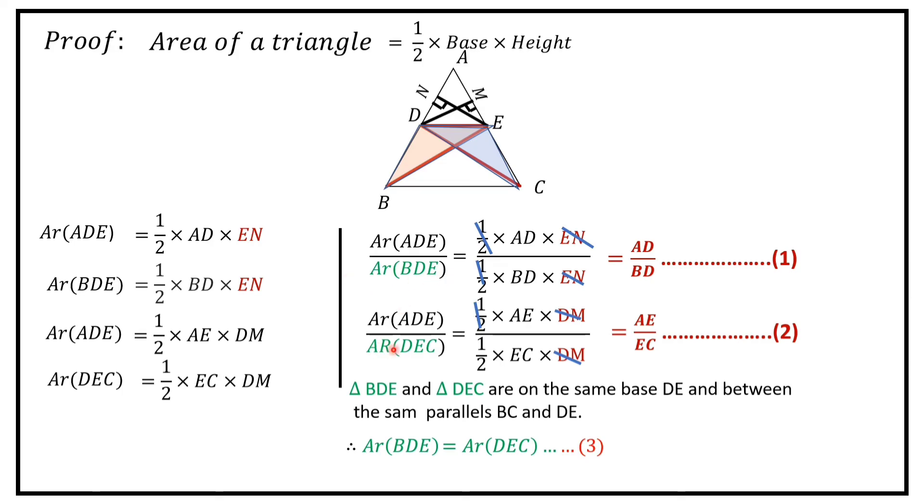in equations 1 and 2, area of triangle ADE are equal. Area of triangle BDE and DEC are equal. So from these equations, we can say that AD by BD is equal to AE by EC. Hence proved.